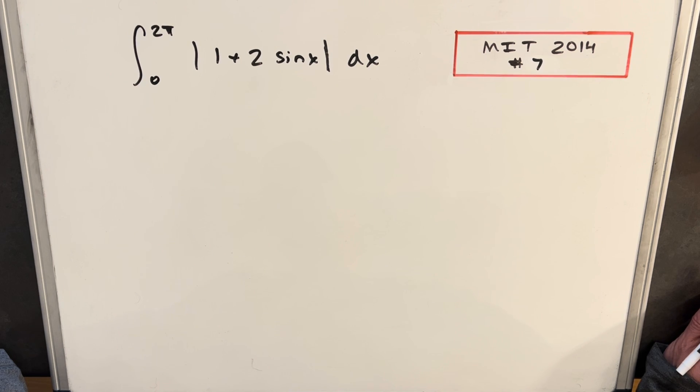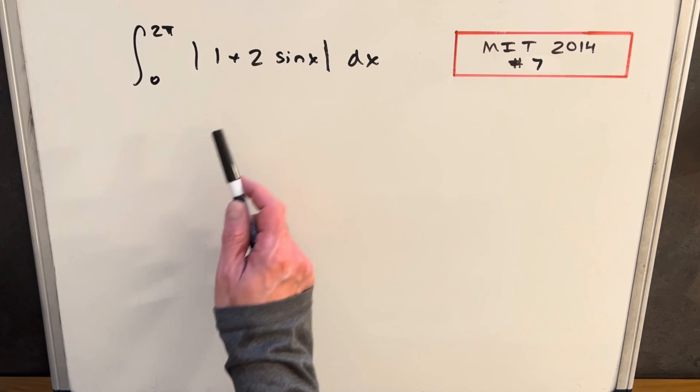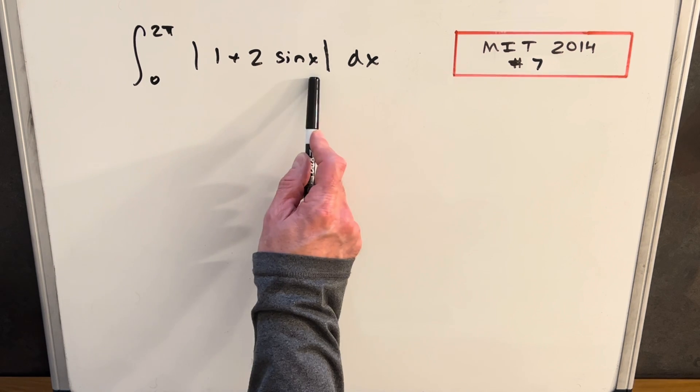Okay, so this would be a pretty easy integral if it was just 1 plus 2 sine x. Only trouble is this absolute value. The way we want to handle absolute value in an integral is it would be nice if we could break this integral up if we know this is positive.